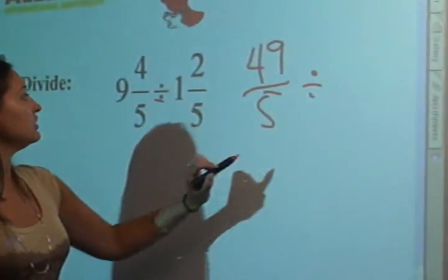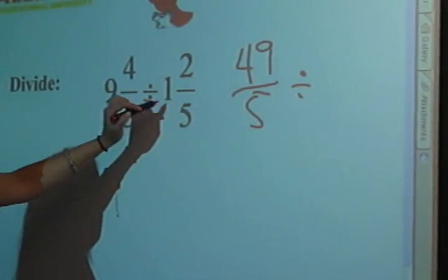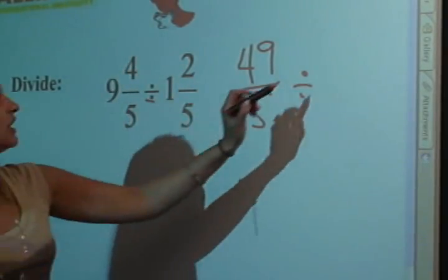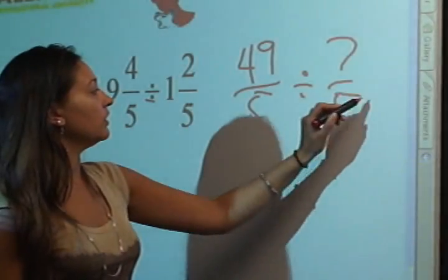We'll carry over our division sign. Then we're going to do the same with this mixed number. 5 times 1 is 5 plus 2 is 7. Carry over our denominator.